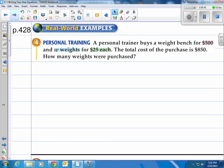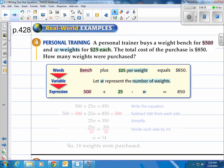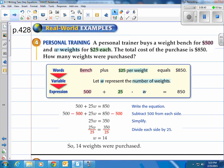How about a real world example? Personal training: A personal trainer buys a weight bench for $500 and W weights for $25 each. The total cost of the purchase is $850. How many weights were purchased? We're buying a bench for $500, then adding on a bunch of weights for $25 each, and the total equals $850. Let W represent the number of weights. So we have $500 for the bench plus $25 per weight, which means 25 times W, equals a total of $850. Then we solve it by subtracting 500 and dividing by 25. That's two steps there. Do you see the two red steps? That's why we call these two-step equations. We get 14, so 14 weights were purchased.